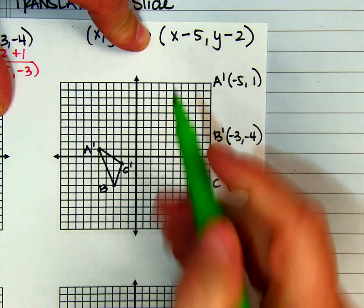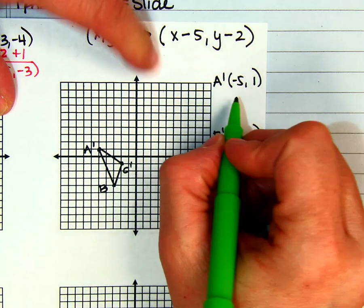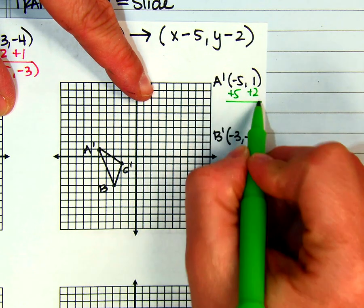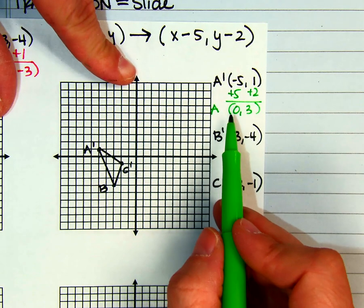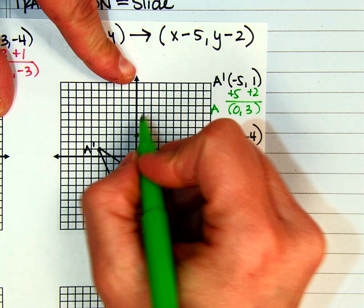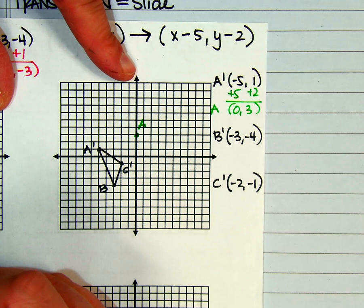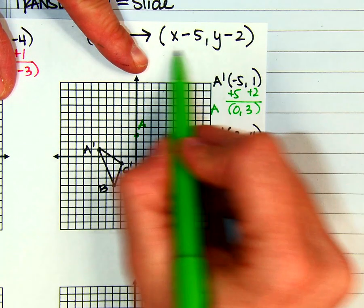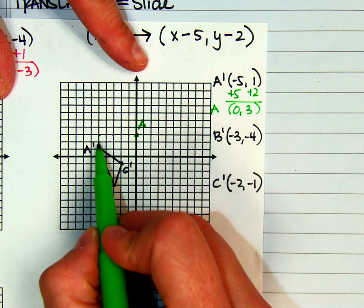So instead of subtracting 5, I need to now add 5 because I'm going backwards. So I'm going to add 5 to this, and I'm going to add 2 to that one. Gives me the order pair of (0,3). So that means that my original pre-image would be at the order pair of (0,3). And there's where my A would be. So let's think about that in relation to what we just did. If I am at A and I'm going to A prime, then I would follow this rule. I would go to the left 5 and down 2. So it works.